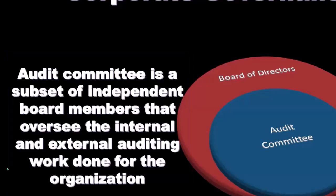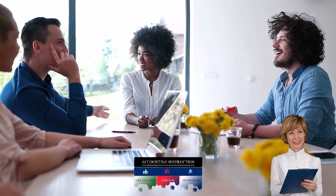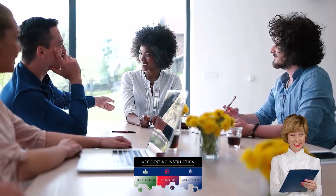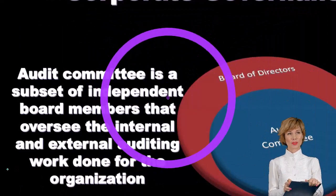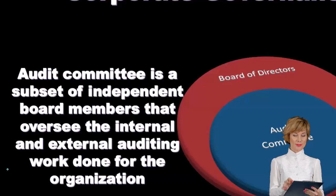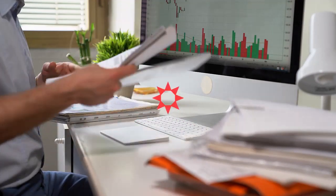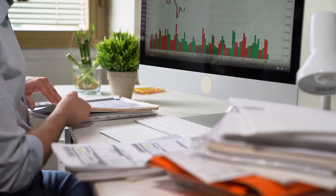A subset of the board — the audit committee — deals with the audit, because the audit in some sense passes judgment on the performance of management. Management is required to put together financial information in accordance with a set of rules, and the audit judges whether that is indeed the case. The auditor reports to those overseeing management — typically the board of directors, and more specifically the audit committee.